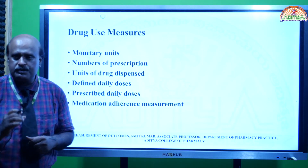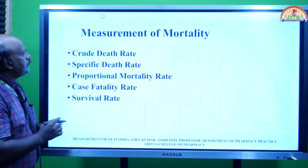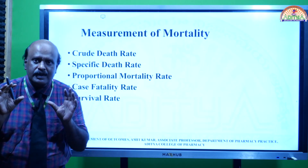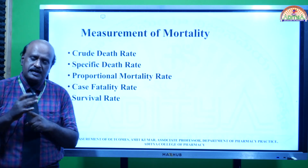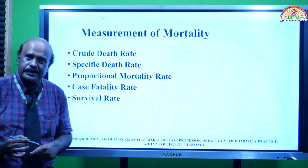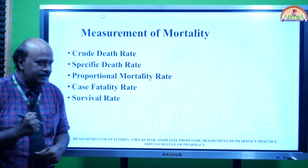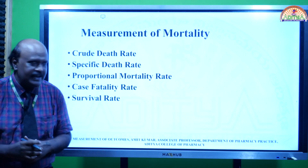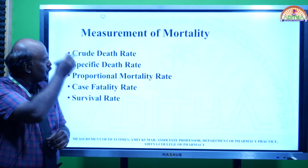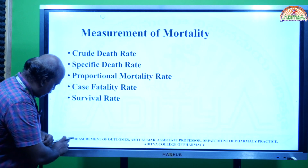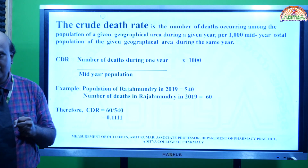Today I will discuss the measurement of mortality. This can be done in five different ways: first is crude death rate, second is specific death rate, third is proportional mortality rate, fourth is case fatality rate, and the fifth is survival rate. We will now go into each one individually.